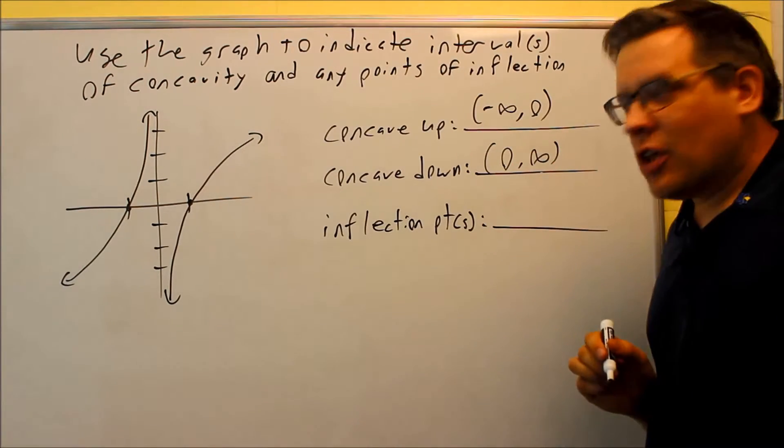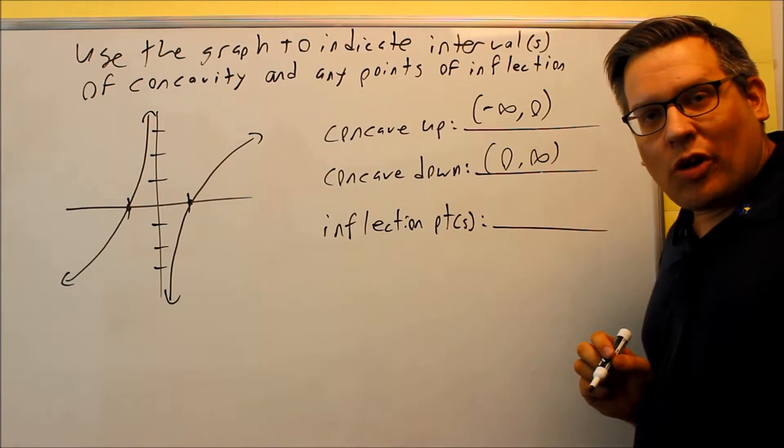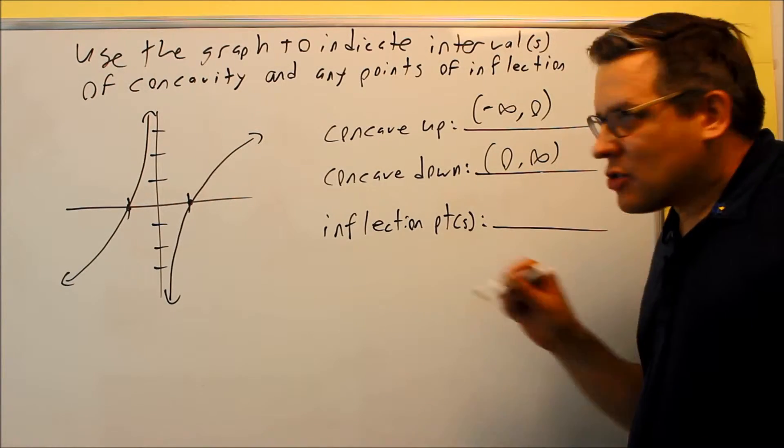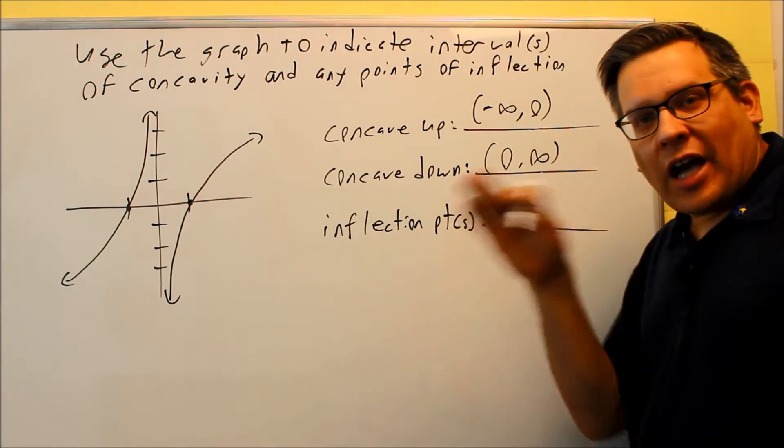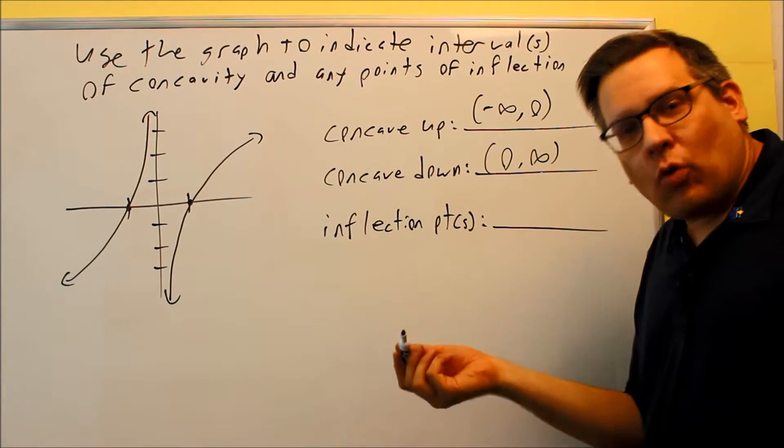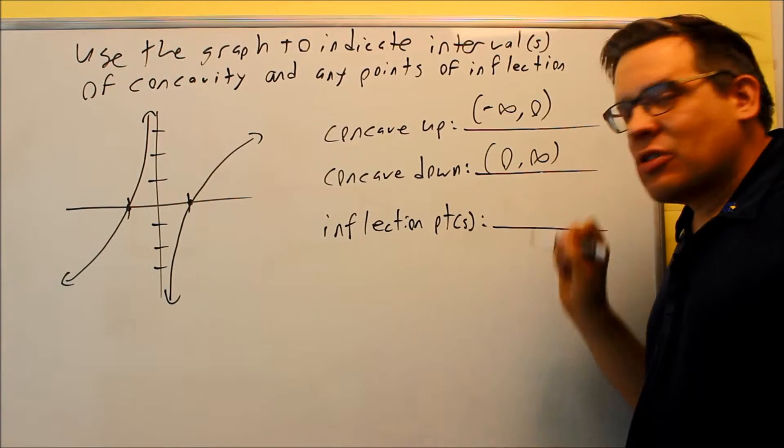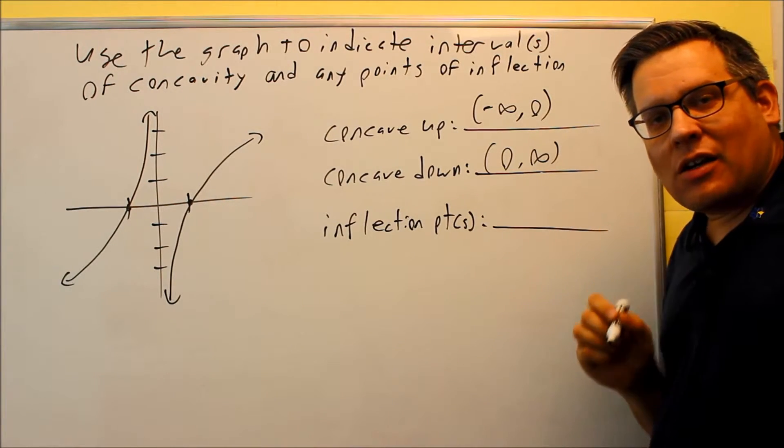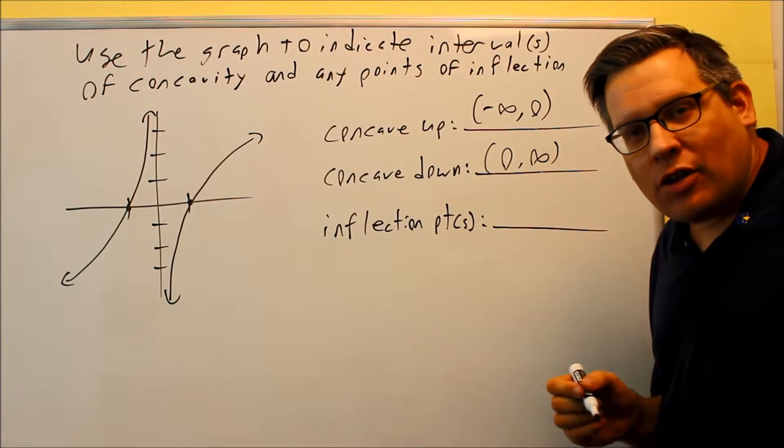Now, what you might be thinking is that there's got to be an inflection point at 0 because that's where the concavity changes because the last example we just did with the other graph, we had the concavity changing at 1. Well, inflection point, again, has to be a point that's actually defined on the original graph.